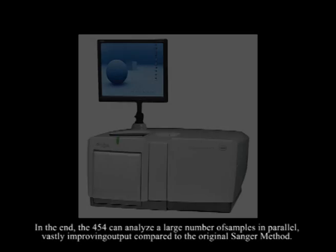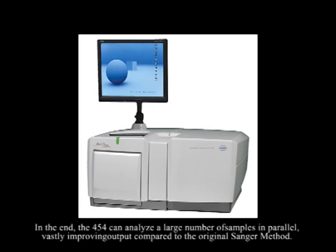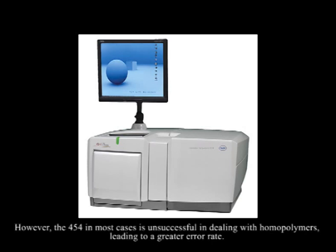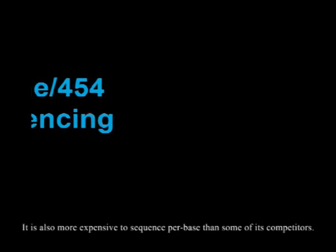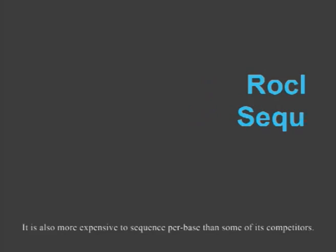In the end, the 454 can analyze a large number of samples in parallel, vastly improving output compared to the original Sanger method. However, the 454 in most cases is unsuccessful in dealing with homopolymers, leading to a greater error rate. It is also more expensive to sequence per base than some of its competitors.